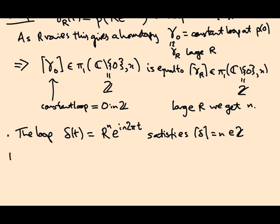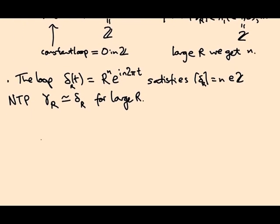But then we need to prove that gamma r is homotopic to delta. Maybe I should call this delta r. For large r. So to achieve this let's write out what the polynomial actually does. So p of z is z to the n plus a bunch of stuff which what shall I call it? Maybe q of z. So q of z is a polynomial of smaller degree. It's a n minus one z to the n minus one plus blah blah blah plus a zero. I'm just collecting all the terms and calling them q.